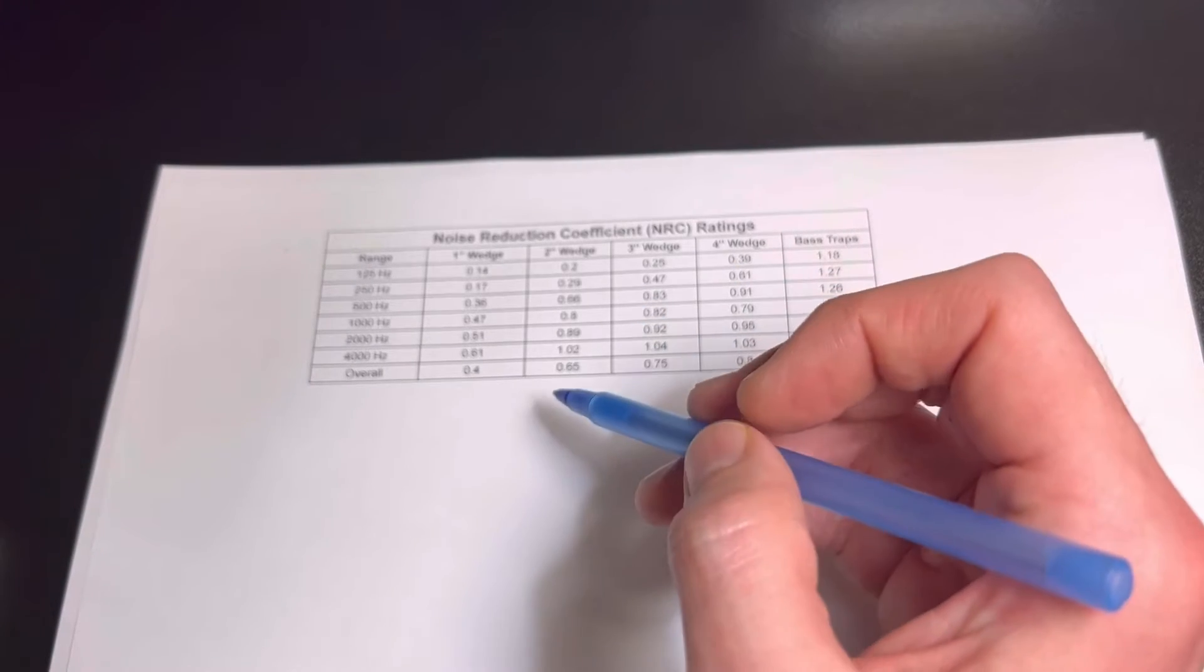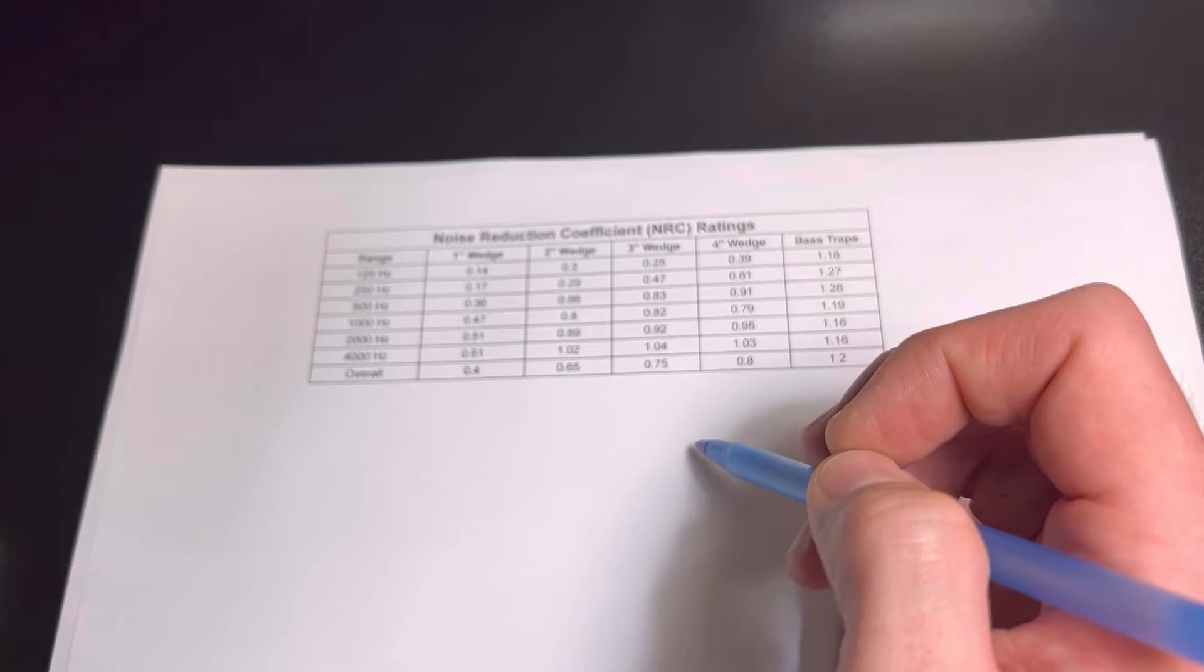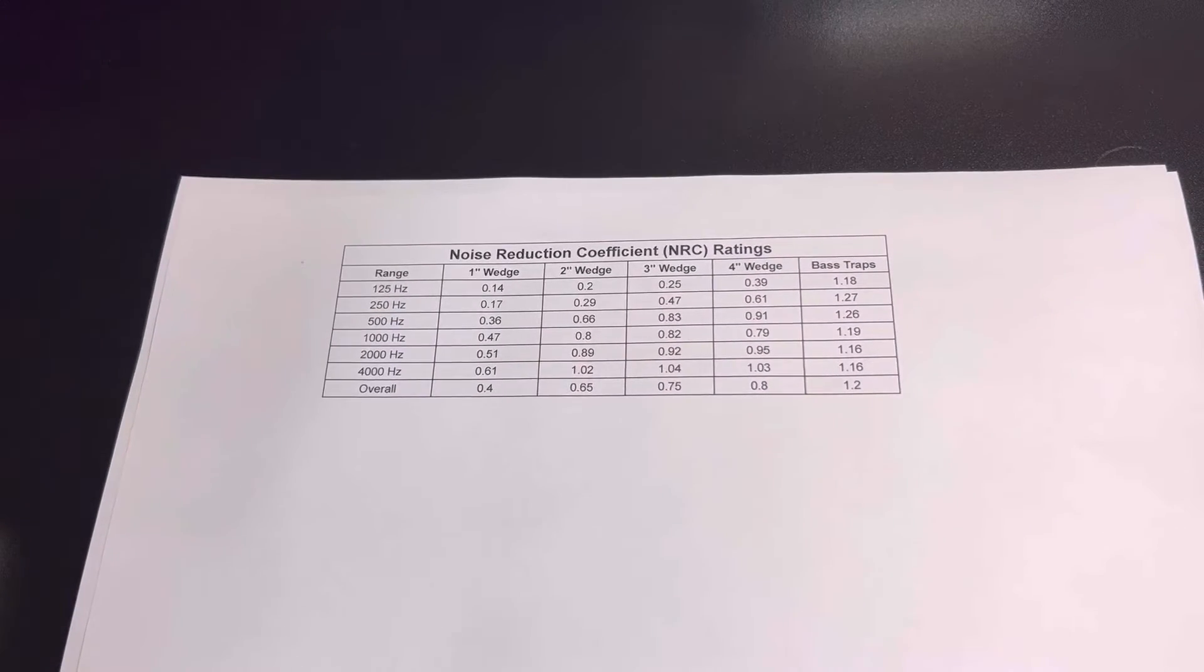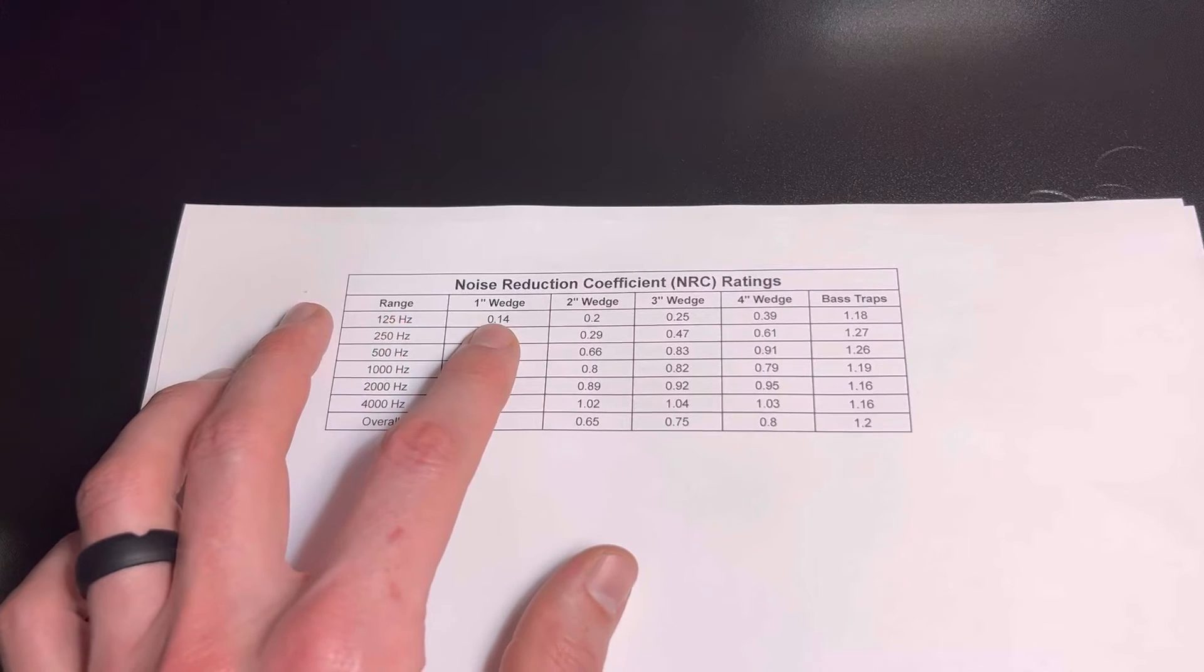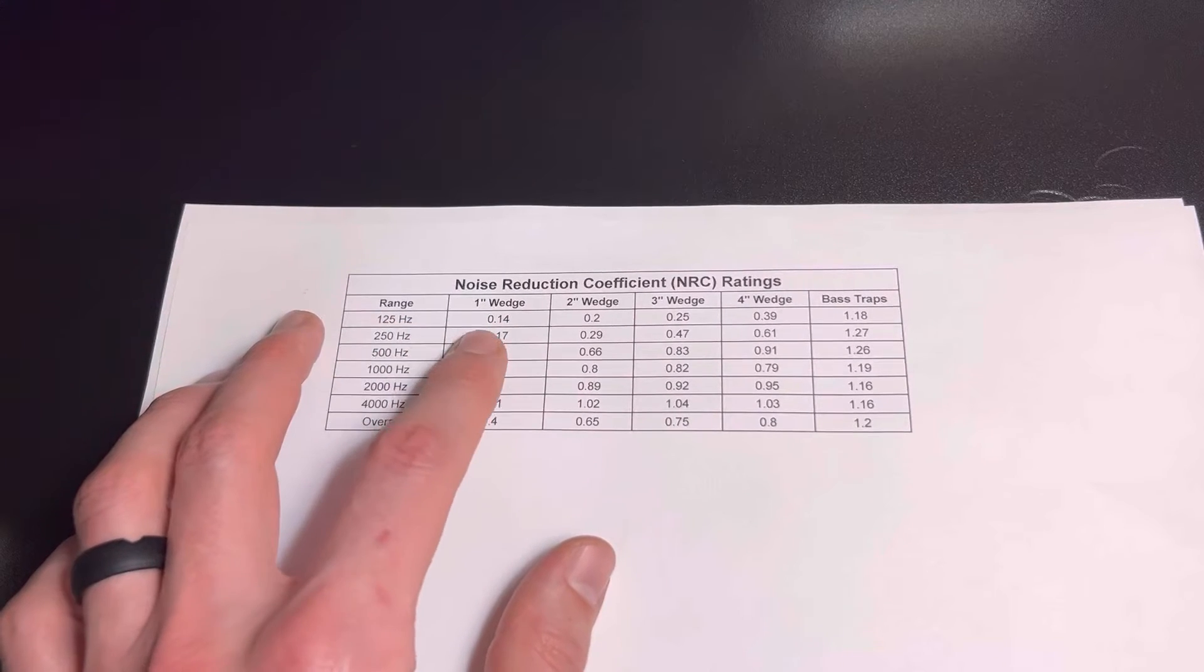This is going to be a number between zero and one. And how we calculate this is when we send our stuff off to a lab, they'll provide us with the absorption ratings broken down into frequency bands.